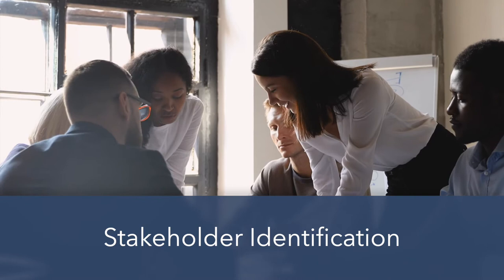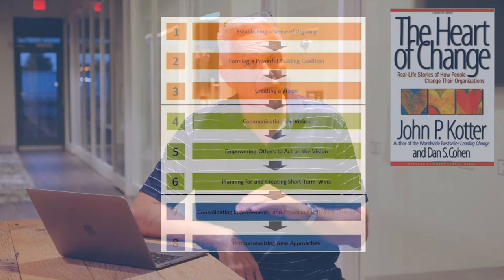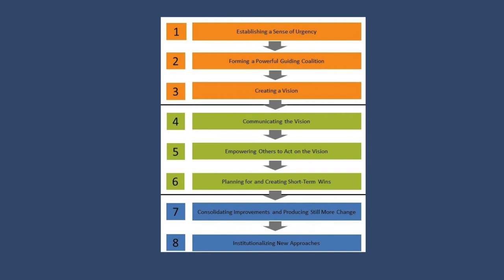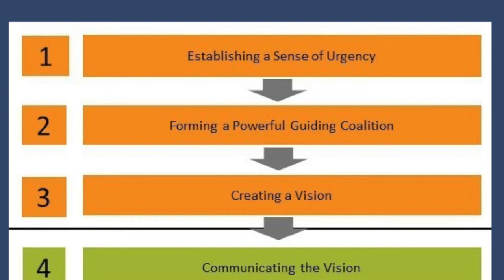First, we're going to help you establish a clear picture of who your stakeholders are, what power and influence they have in the system, and where they stand with regard to supporting or resisting the change you're trying to implement. Second, we're going to look at a change model called the Heart of Change from John Kotter at Harvard Business School. This model is widely regarded as a core foundation for successfully implementing large-scale change, and we're going to be looking at the first three of his eight phases to help you get started with your change strategy.